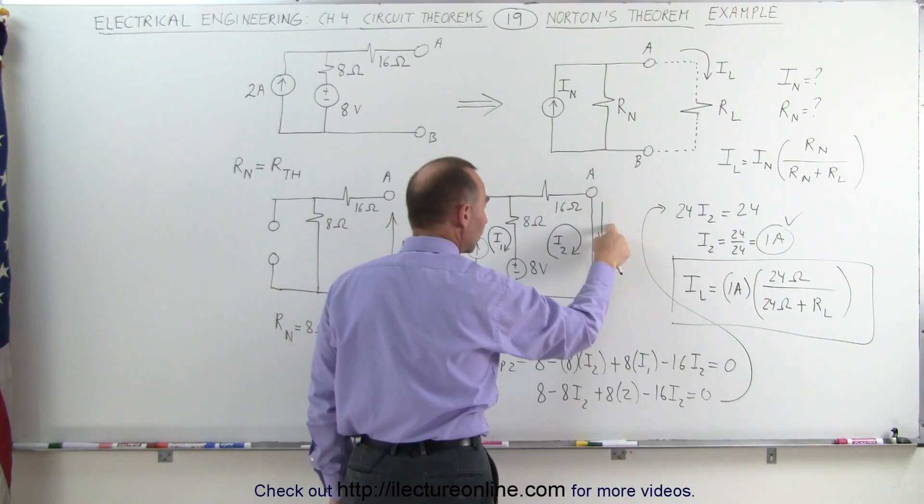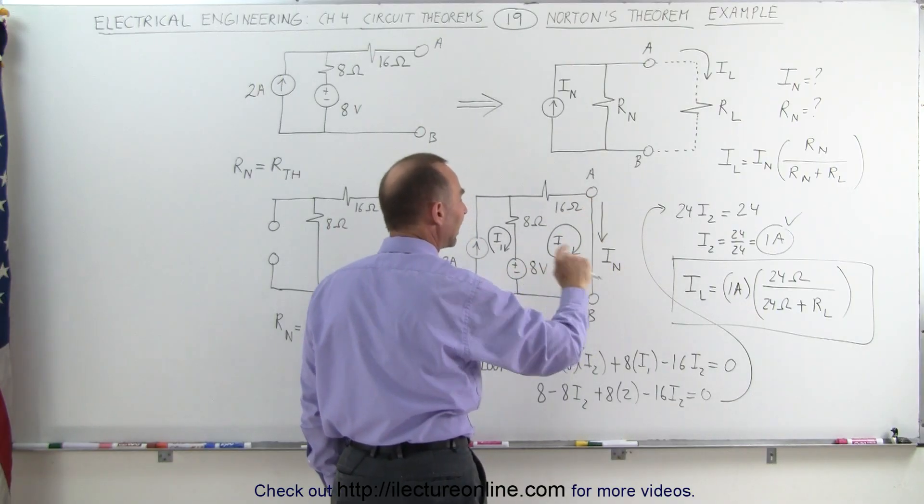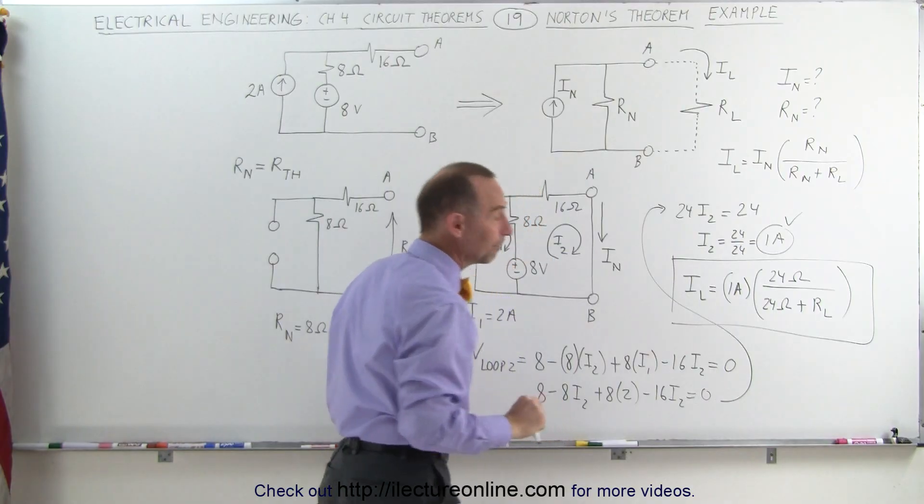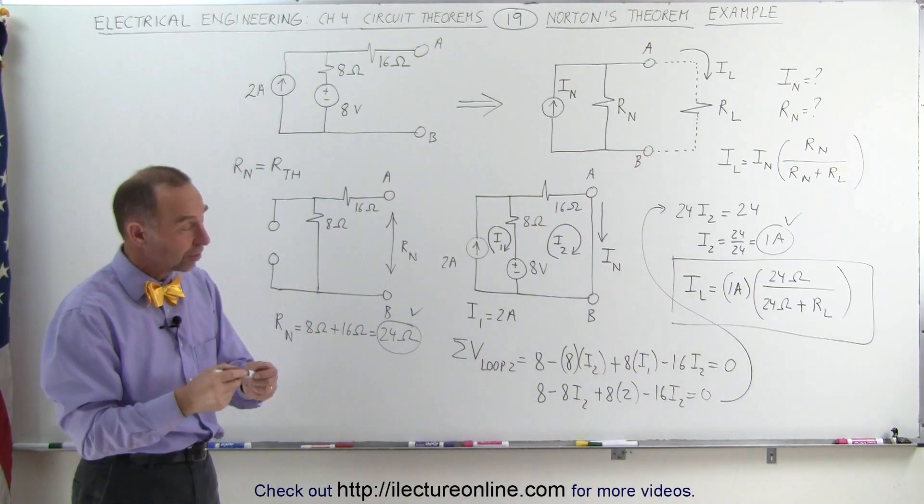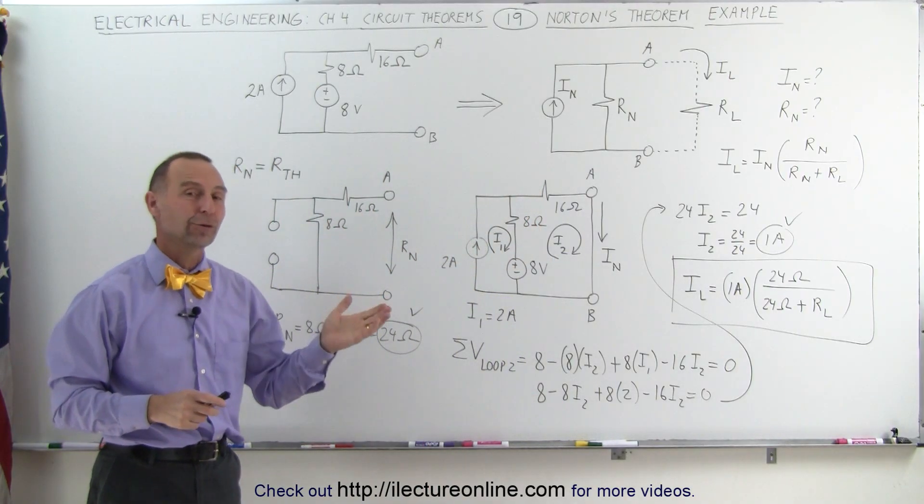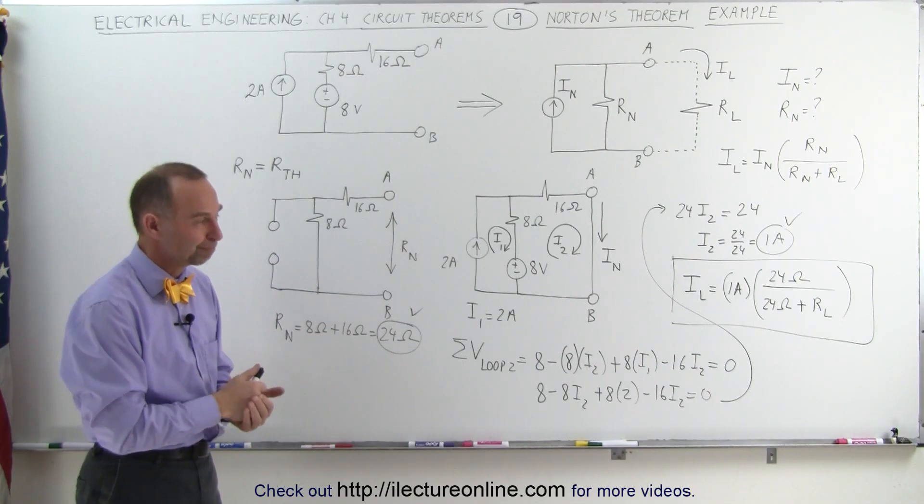To find the Norton current, we're going to leave everything intact, we're simply going to short out the terminals between A and B, and figure out what the current is through that part of the circuit, through the short, and that will then be the Norton's current. And that's how we find the equivalent circuit, and that's how we find the current through the load resistor. That's how it's done.